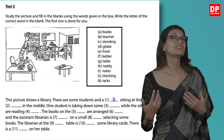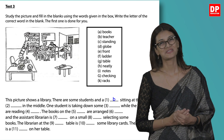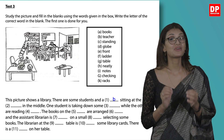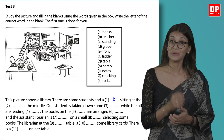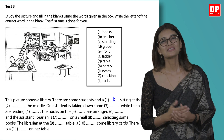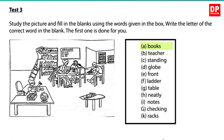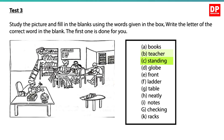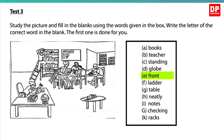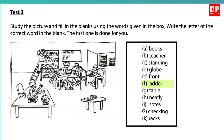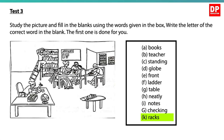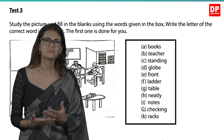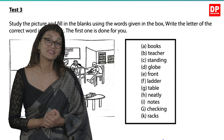Let's move on to test three. Study the picture and fill in the blanks using the words given in the box. Remember, you are supposed to write the letter of the correct word. You get five marks with this, so let's get this right. The words given in the box are: Books, Teacher, Standing, Globe, Front, Ladder, Table, Neatly, Notes, Checking, Racks. They are all nouns, verbs, and adverbs, and you can easily see them in the picture given.